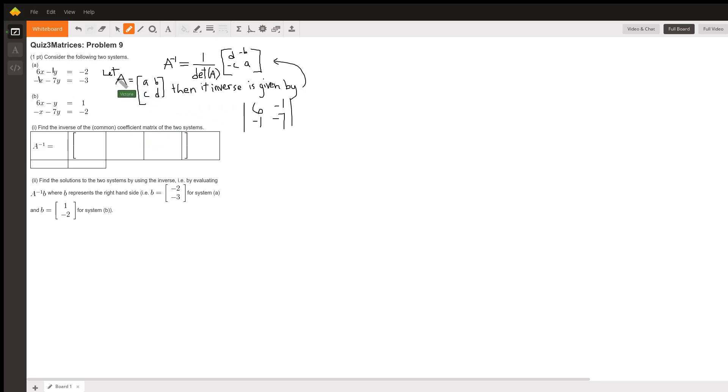If any arbitrary matrix that's a 2 by 2 is A, B, C, D, then this is how you can find its inverse. That's the formula.